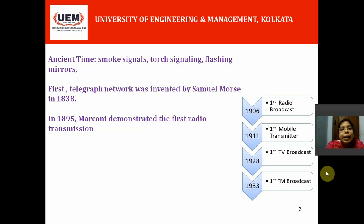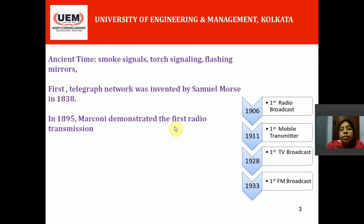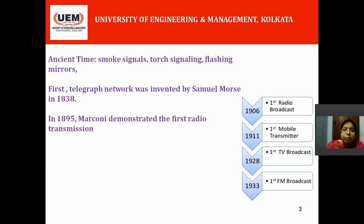First, the telegraph network was invented by Samuel Morse in 1838. In 1895, Marconi demonstrated the first radio transmission. So we can say Marconi is the father of radio transmission. The first wireless technology was started through Marconi — he first demonstrated the radio transmission.